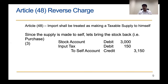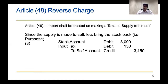Since the stock is now zero, we need to bring it back into the books. So we pass a purchase entry to ourselves: Stock or Purchase account debit 3,000, Input Tax debit 150, and Self Account credit 3,150. This mirrors the standard purchase accounting entry, applied as a self-transaction, completing the third step.